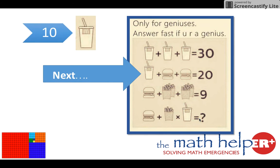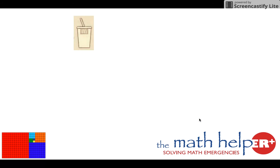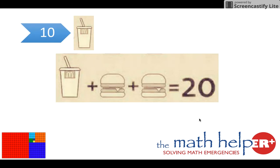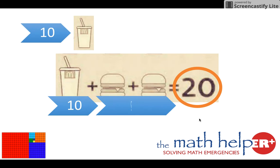Next, we have a soda and two burgers equaling 20. We know that the soda is 10. We know that the rest must equal 20, so 10 plus 10 will give us that 20.